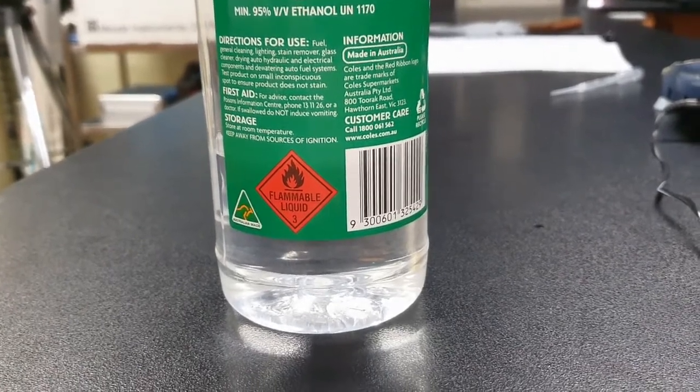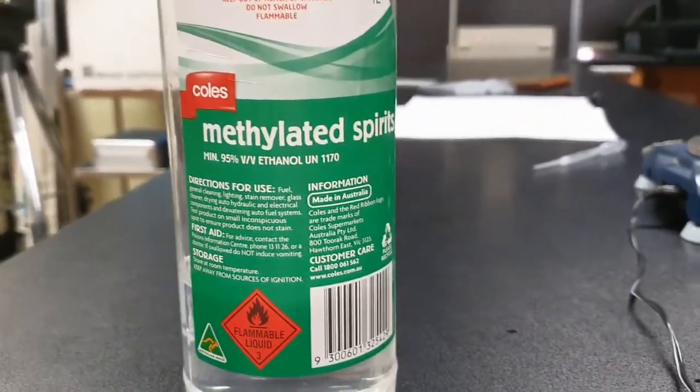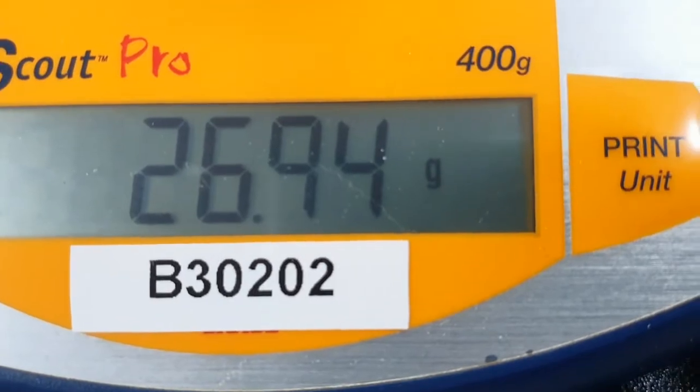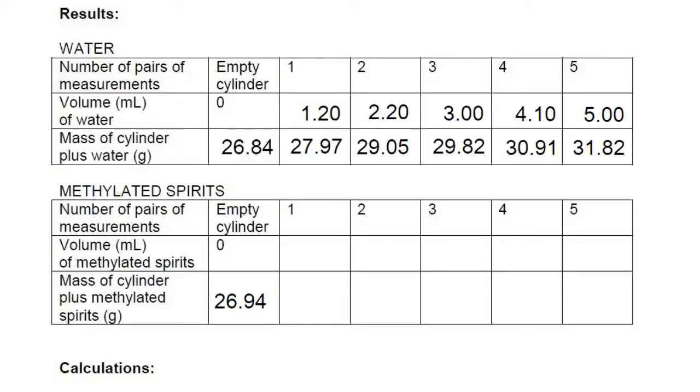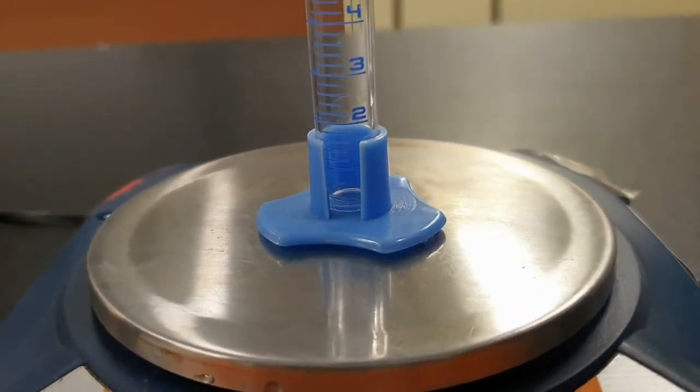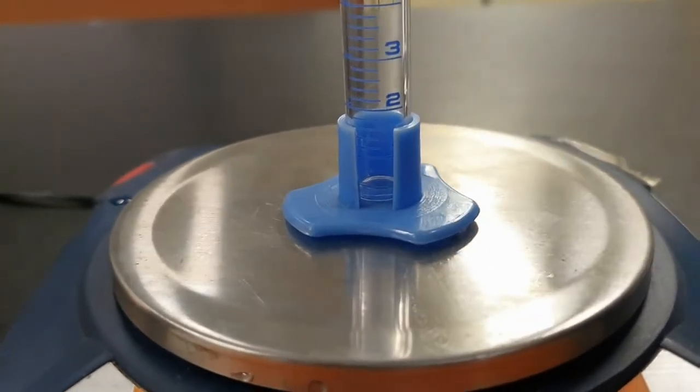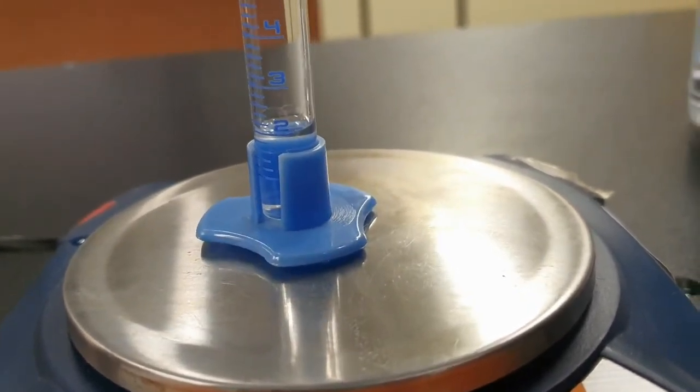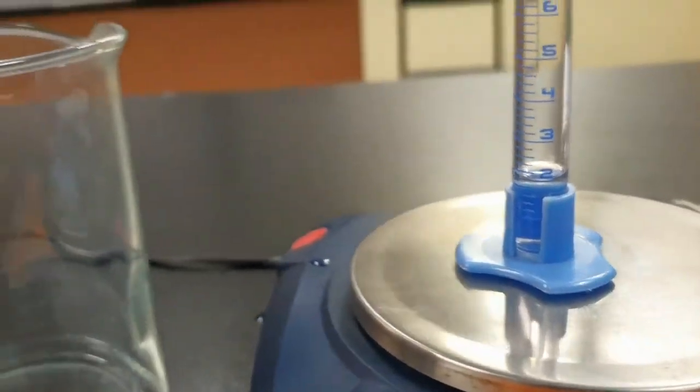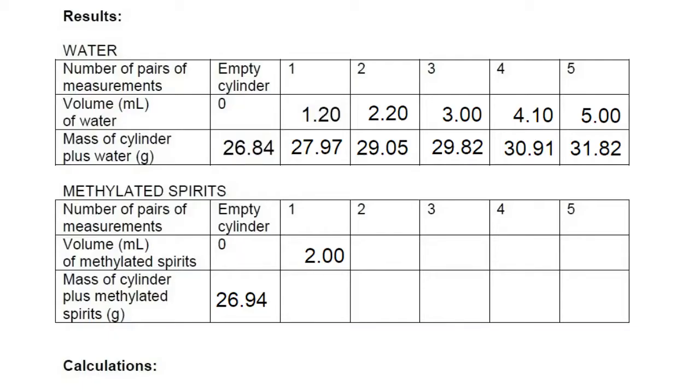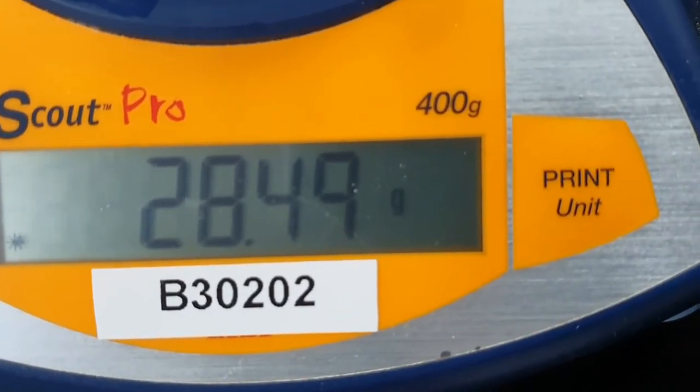Now I'm going to get similar sort of data for another liquid, methylated spirits. First, the weight of the empty measuring cylinder. This time I'm going to add two milliliters each time instead of just the one. And I'll get an accurate measure of the volume. So that's just on two. The mass there is 28.49.